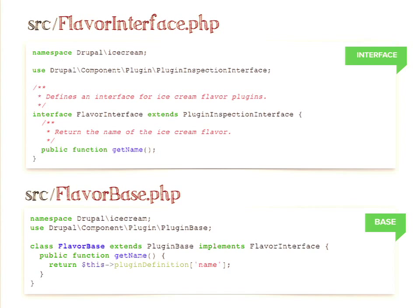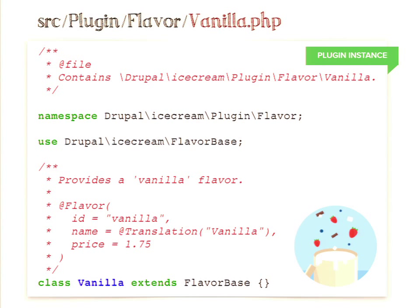You can provide a base class — not required but recommended — partially to document what all the base methods are that someone might want to implement for this plugin type, and also because most of the functionality for plugins of a given type is the same and only varies slightly. In this example we're implementing a 'getName' method in the base class that just reads the name from the annotation metadata. This means that when somebody wants to provide a new flavor of ice cream and extends the base class, they actually don't have to do anything other than provide the annotation metadata — the base class handles the rest.